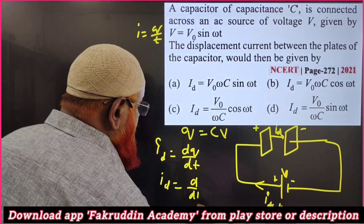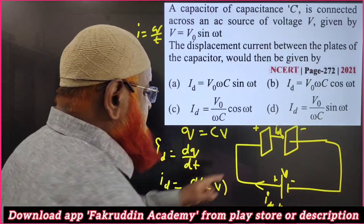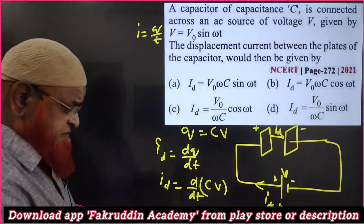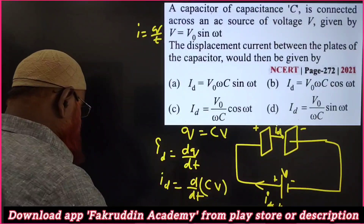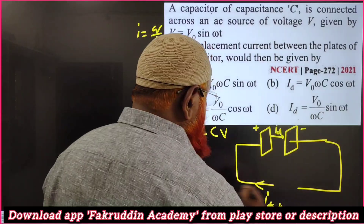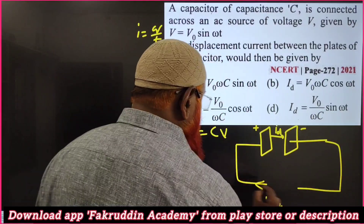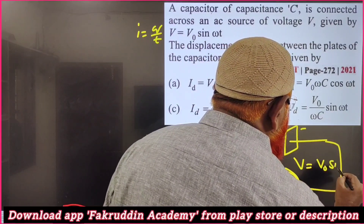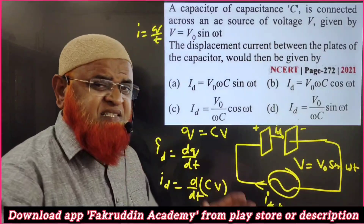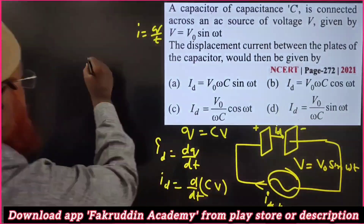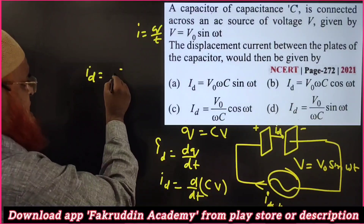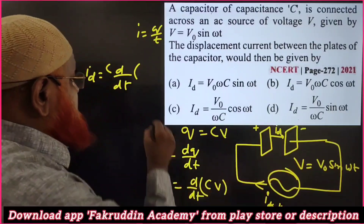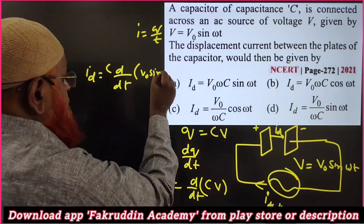So displacement current I_d = d/dt of (C × V). Capacitance is constant whereas potential is changing. If we consider AC current, the voltage is represented as V = V₀ sin(ωt) because it is a sinusoidal wave. Then drift current = d/dt of C × V₀ sin(ωt).